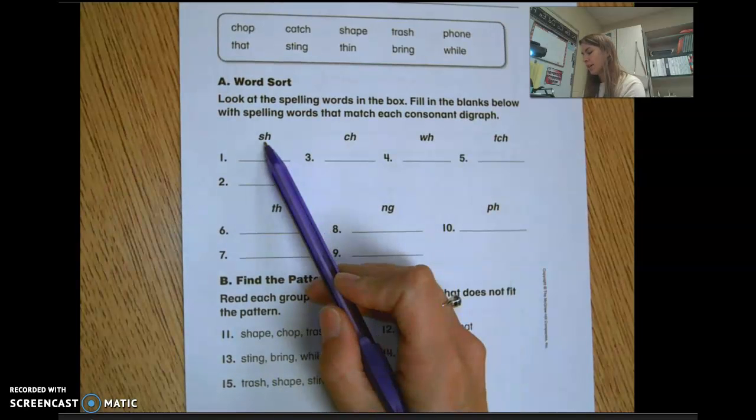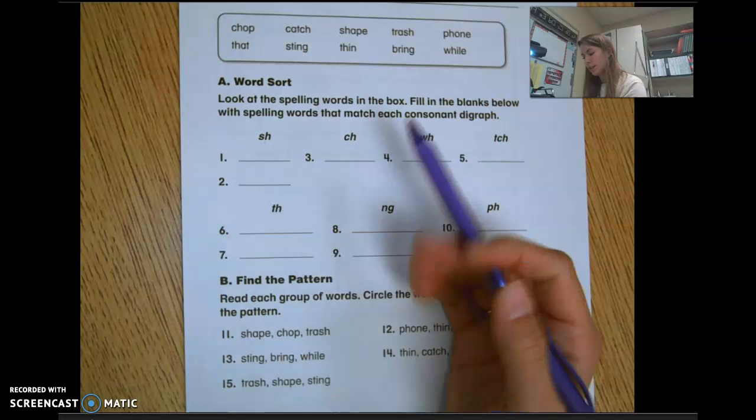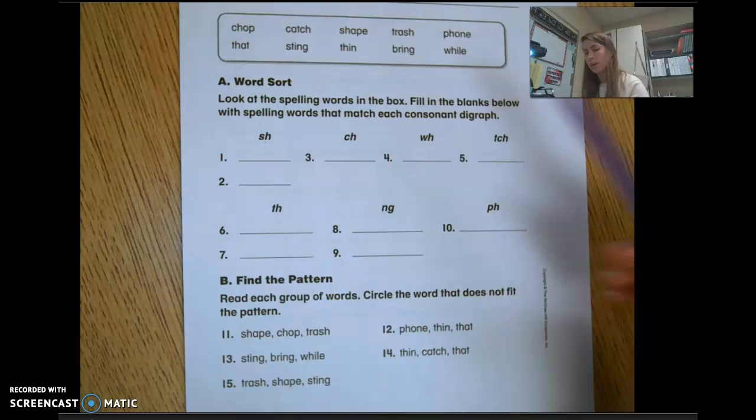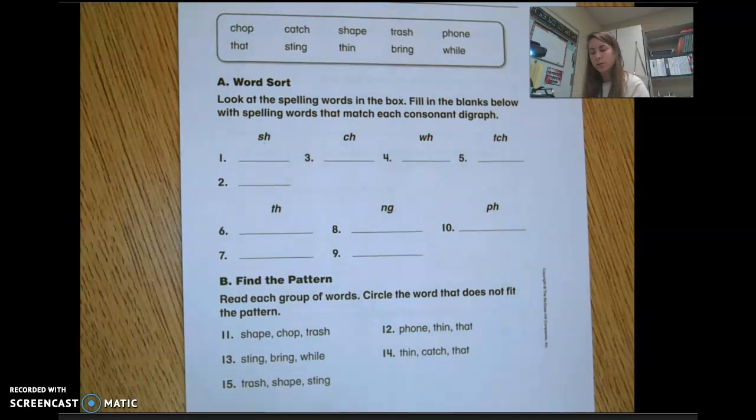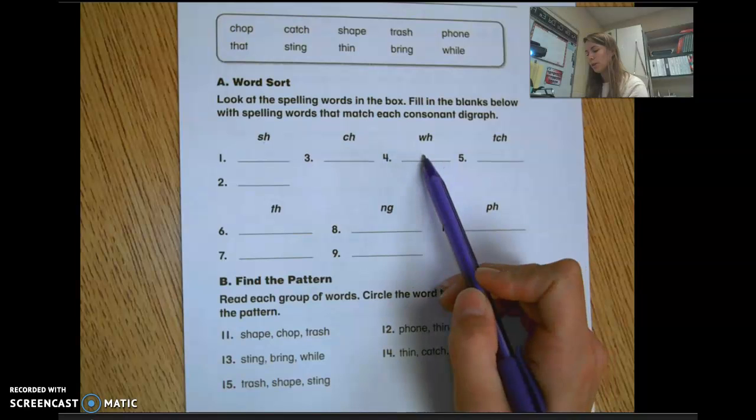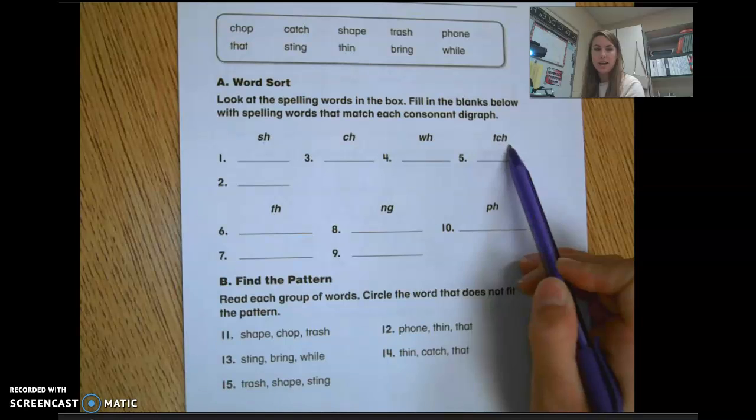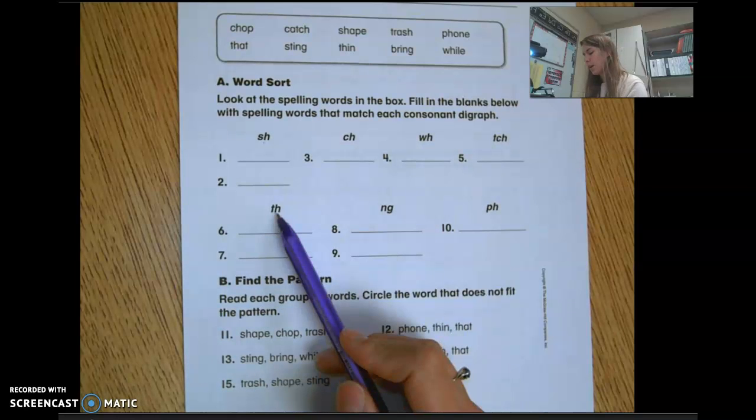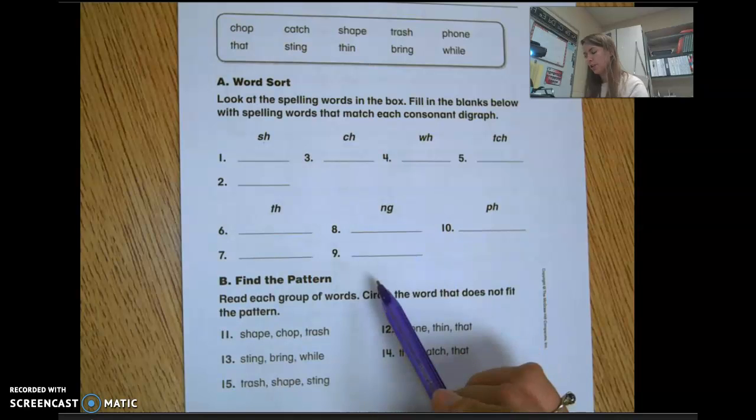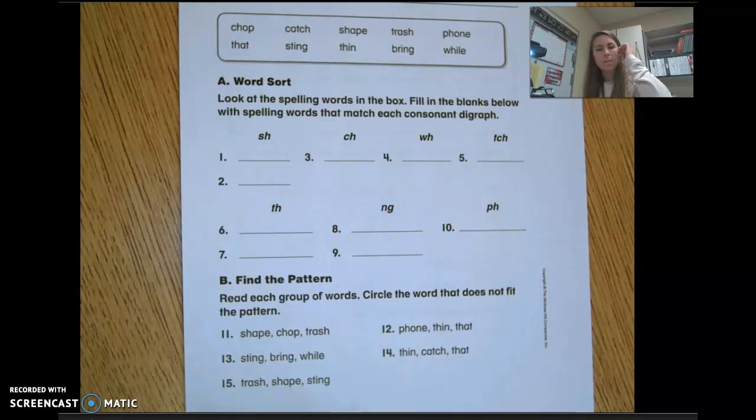So sh words, you'll put both of those right here. Since there are two lines, it lets you know that there are two words up here that have the sh sound. You have one word with the ch sound, one word with the wh sound, and another word with the ch sound but spelled tch. Then you have two words with the th sound, two words with the ng sound, and one word with the ph sound sounding like f.